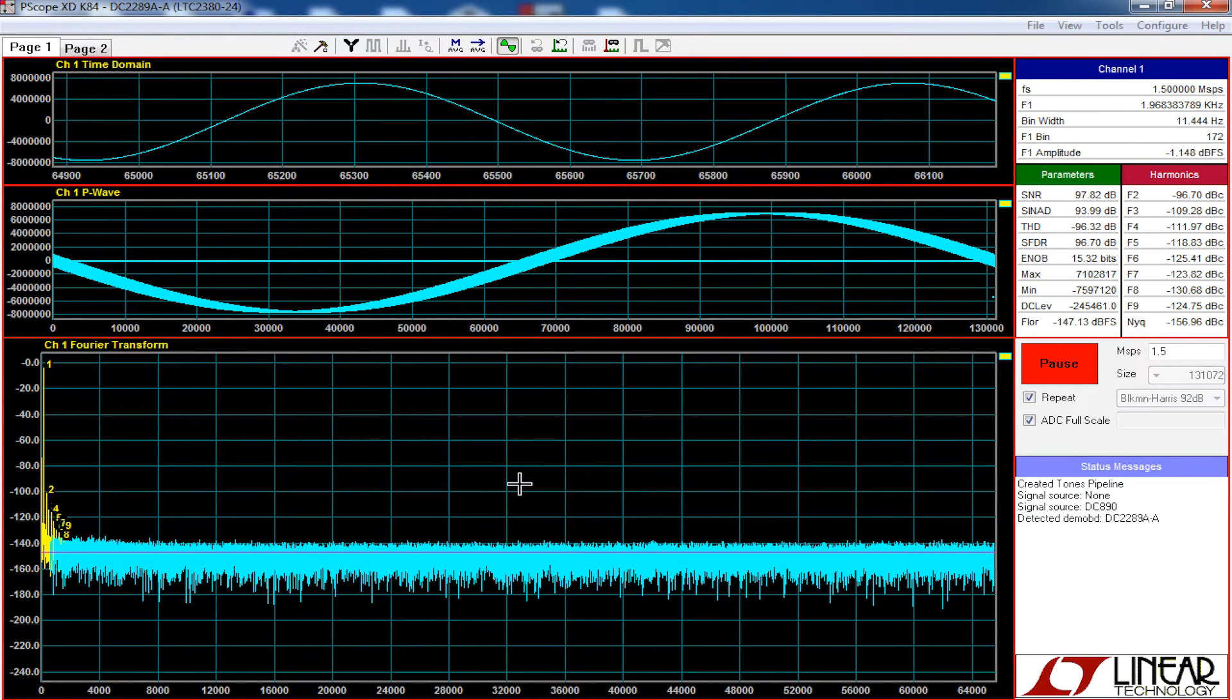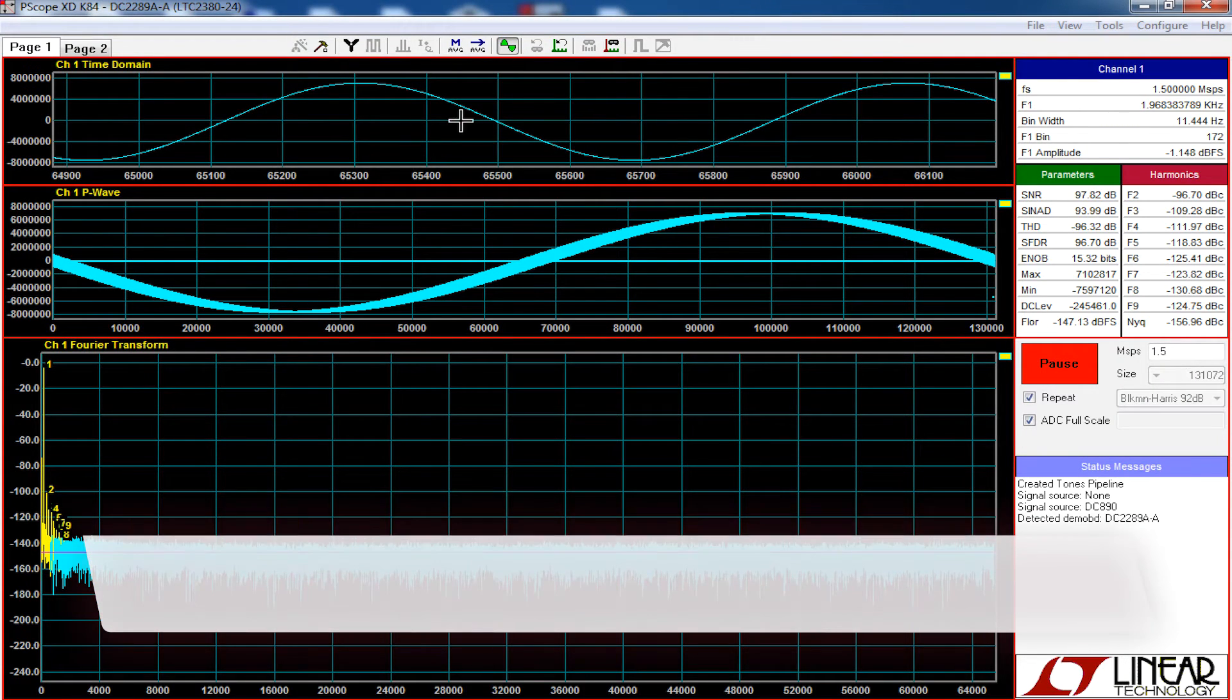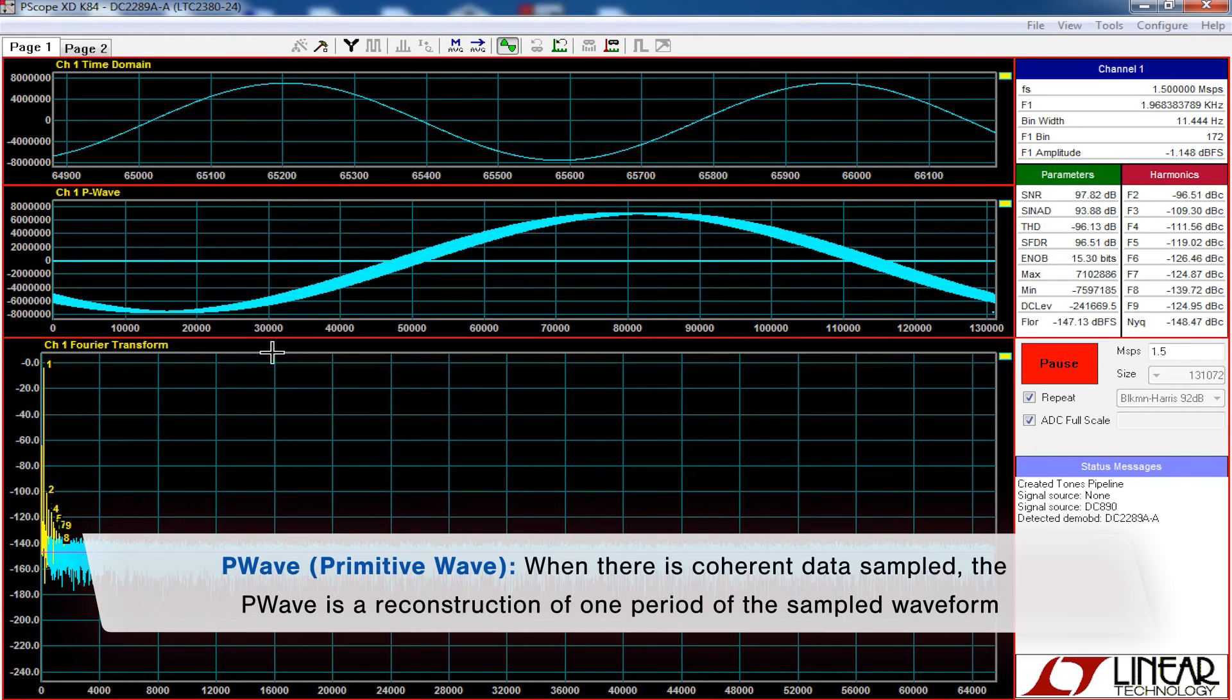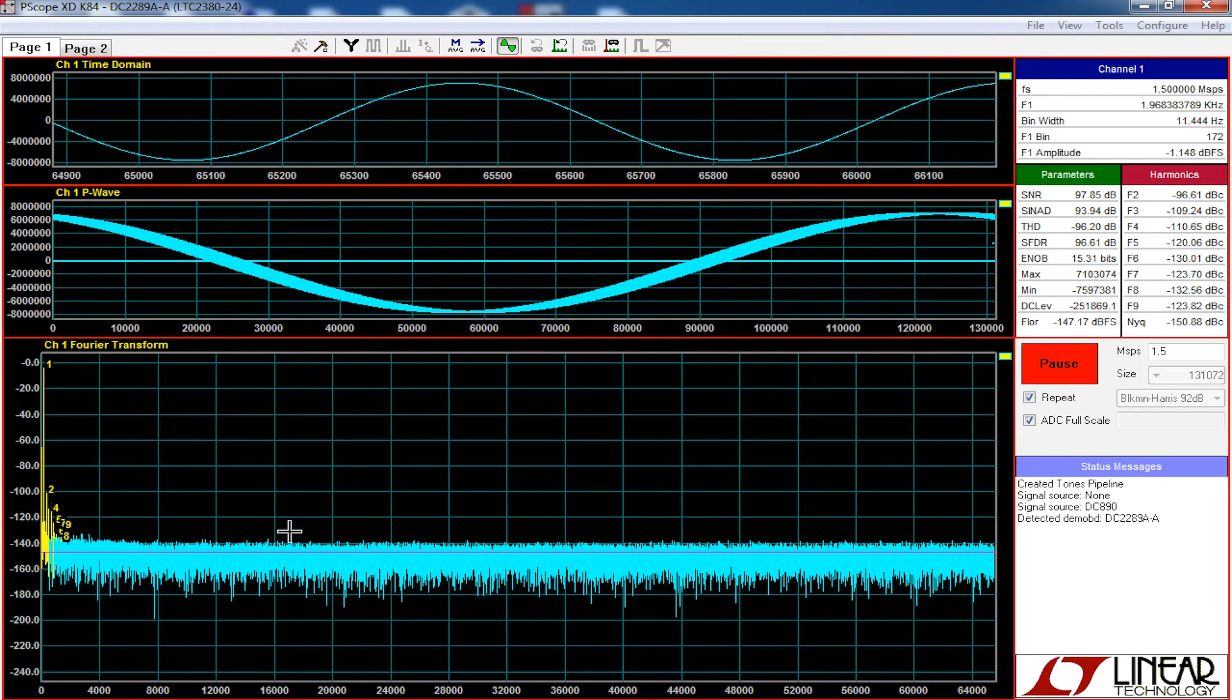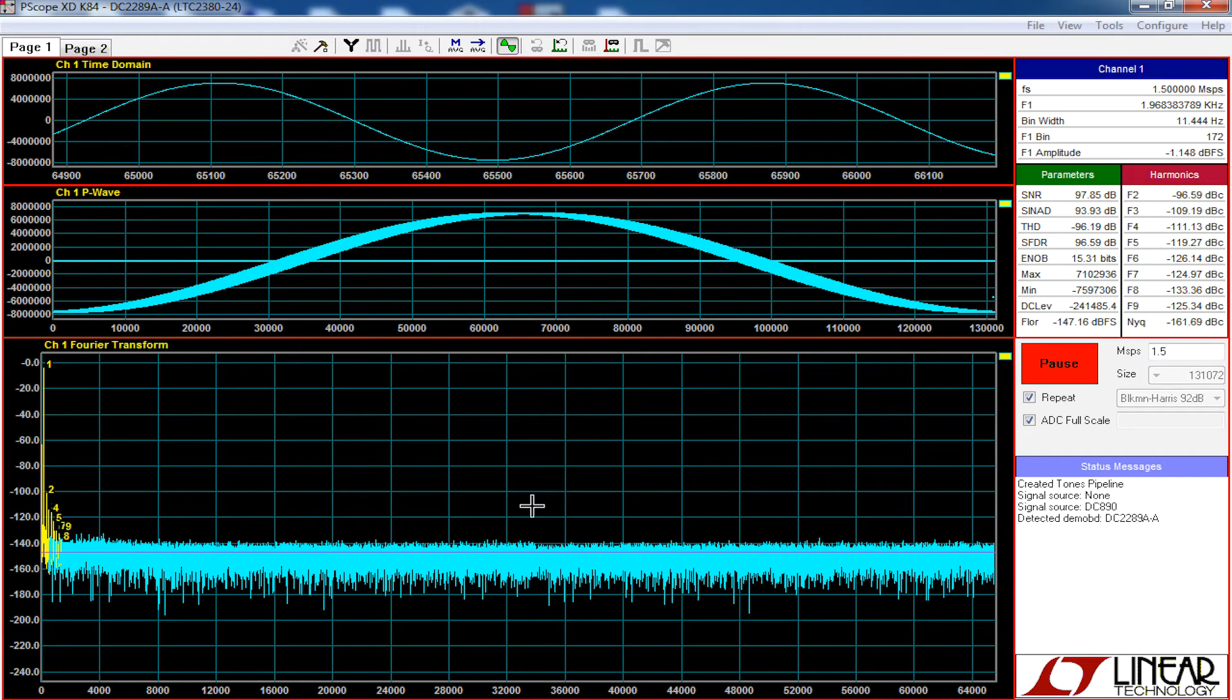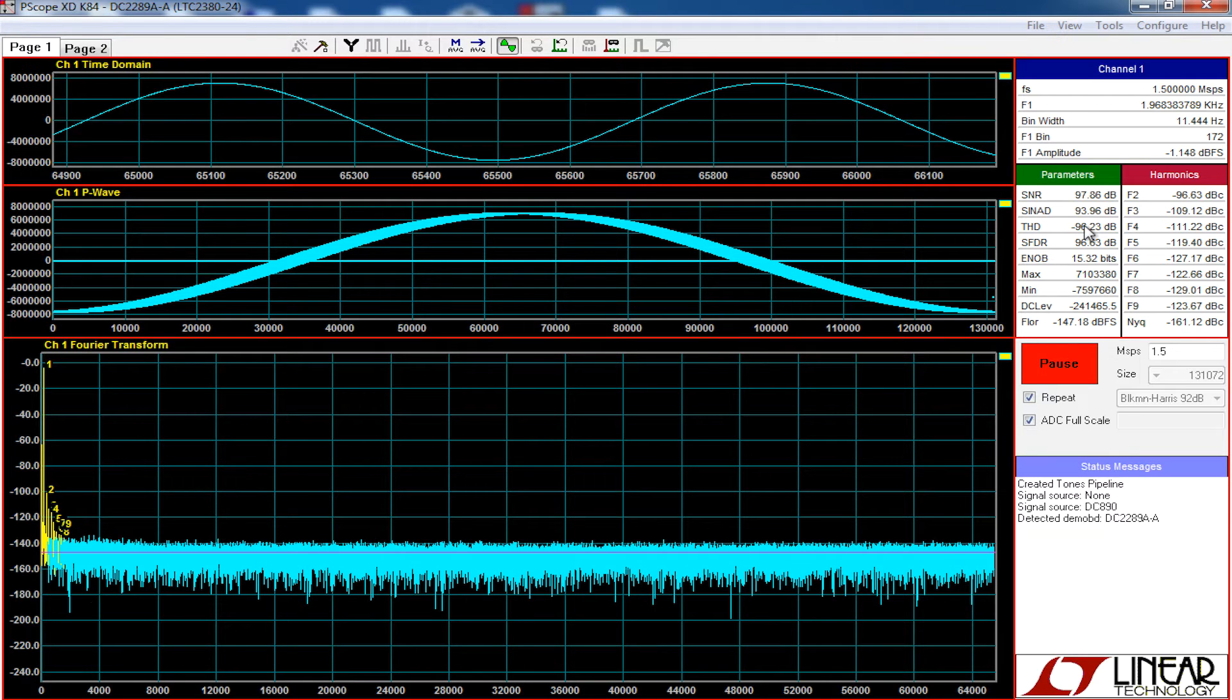So here we have LTC's P-Scope and it's pretty obvious. You've got the time domain, the waveform, Fourier transform, very clearly labeled here. Up at the top here at that one, you can see the two kilohertz of the signal that we're getting from the DC 1858. Now you get a couple of harmonics down here that you can also see over here and how that affects the total harmonic distortion.